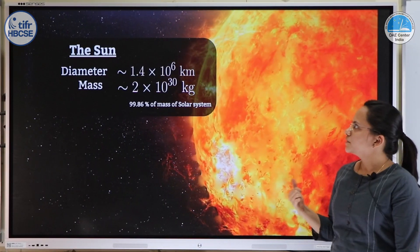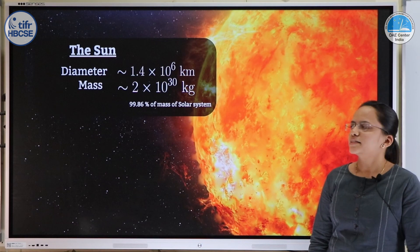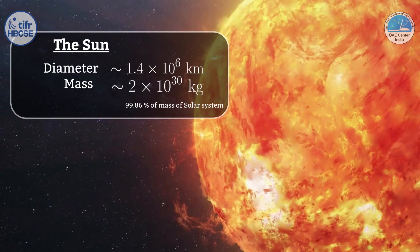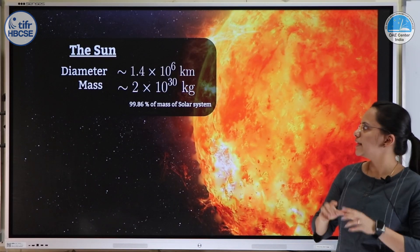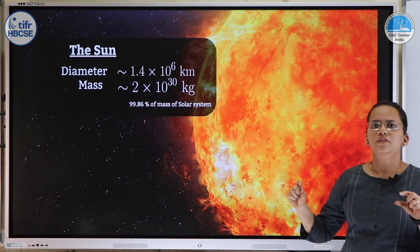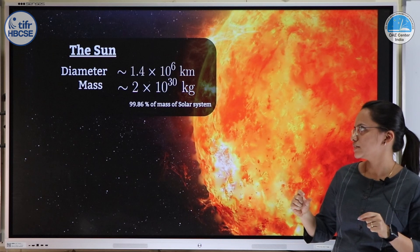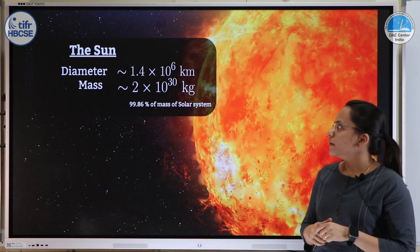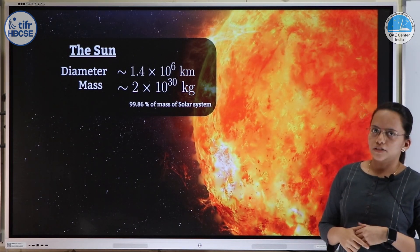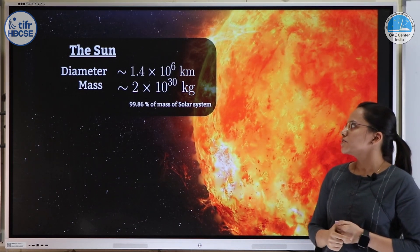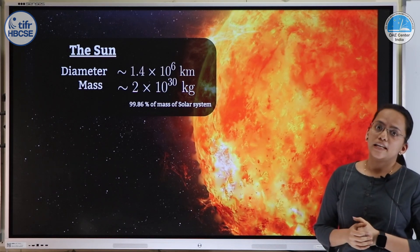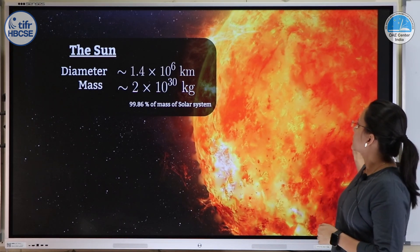Now we come to the star of the solar system, that is the sun. The sun is the only star in the solar system and its diameter is about 1.4 × 10⁶ km, which is roughly 110 times that of Earth — so along the diameter of the sun you can fit 110 Earths. The mass is about 2 × 10³⁰ kg and it constitutes about 99.86% of the mass of the solar system.